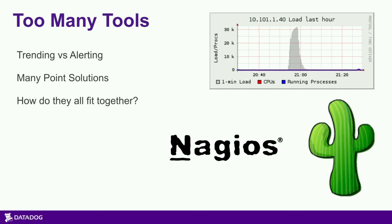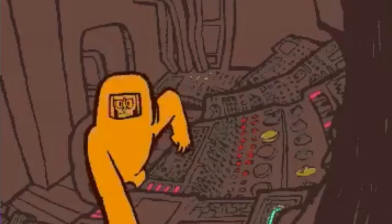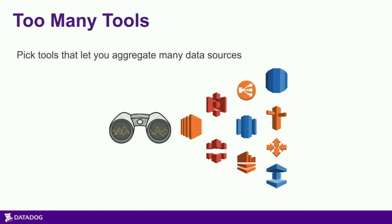We have lots of point solutions — if you're using Hadoop or Cassandra, you're likely picking up a monitoring tool just for that. Monitoring doesn't mean just collecting all the metrics and shoving them on a bunch of dashboards you can't read and getting tons of alerts all the time. We want to be able to collect data from as many sources as we can and bring them into a single place where we can make intelligent decisions.